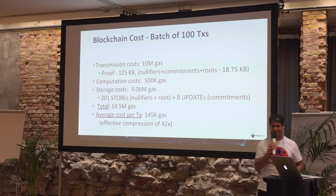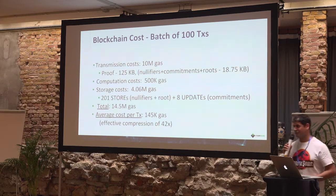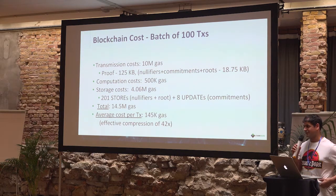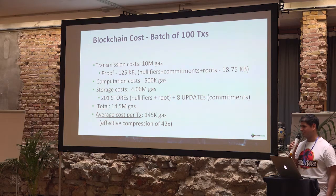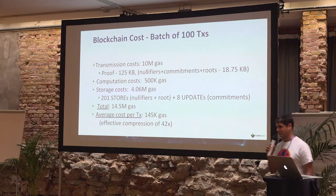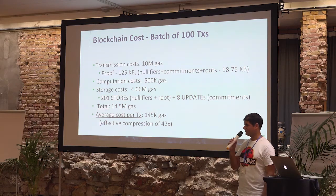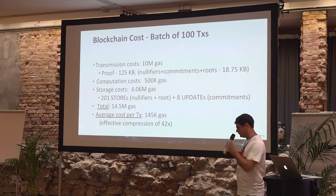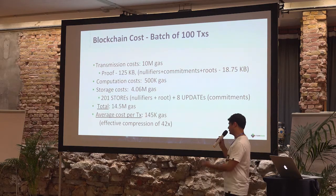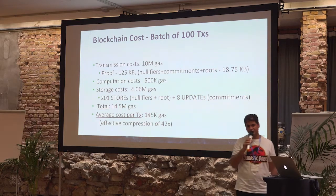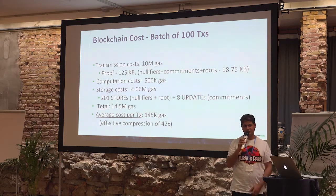There are a few other options. We can split the proof to several blocks — it will still work, the latency will be a little higher, but the cost per transaction will still be 145,000 gas. This is something we can do already now.